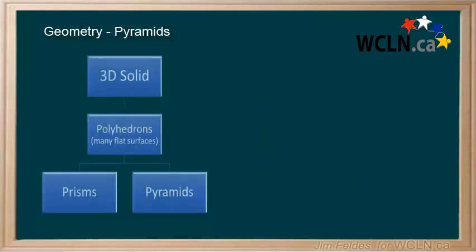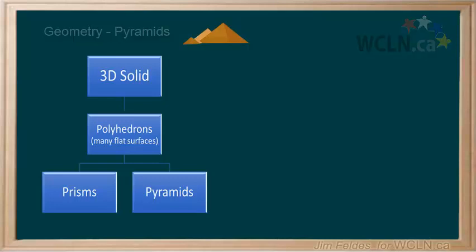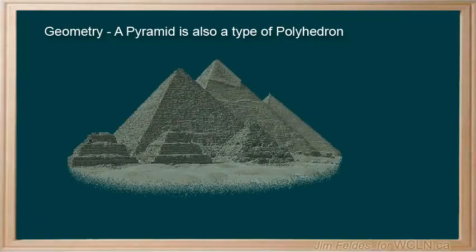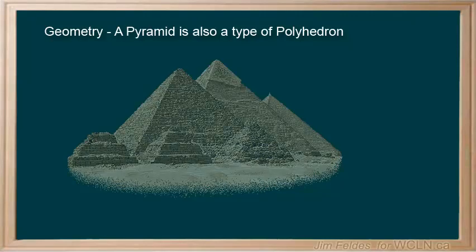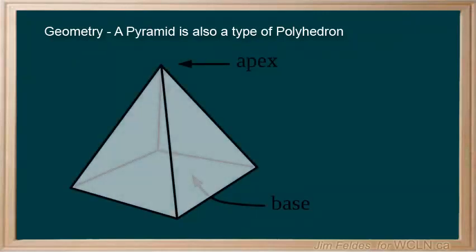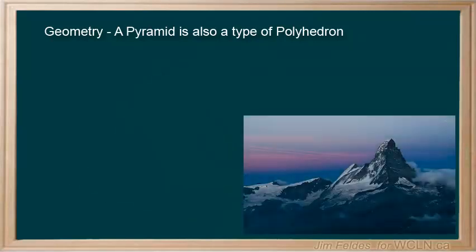In this video, we'll extend our understanding of polyhedrons to include another category of familiar solids called pyramids. Pyramids you're likely familiar with are dramatic examples of this type of polyhedron. Just like prisms, they're solids with many flat surfaces. What differentiates pyramids from prisms is that they only have one base. This means that the vertices of the base all come to a single point — the tip or apex. Apex is a commonly used word for mountain peak.